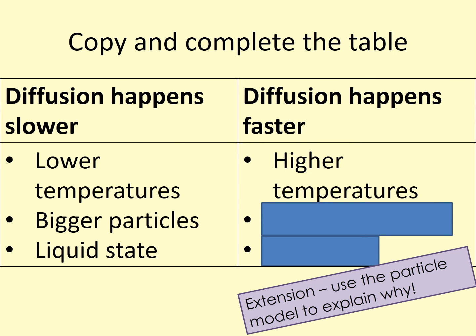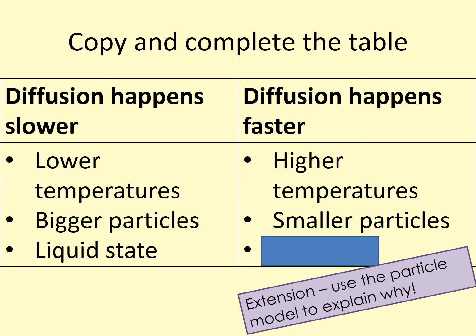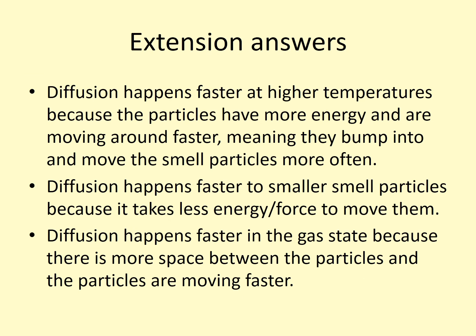Diffusion happens faster at higher temperatures and with smaller particles, and it happens faster in the gas state than in the liquid state. Diffusion happens faster at higher temperatures because the particles have more energy and are moving around faster, meaning they bump into and move the smell particles more often. Diffusion happens faster with smaller particles because it takes less energy or force to move them. Diffusion happens faster in the gas state because there's more space between the particles and because the particles are moving faster than they are in the liquid.